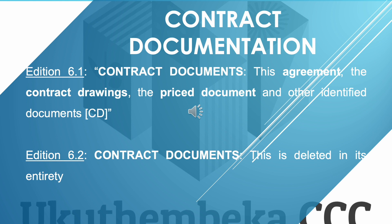The Edition 6.2 includes by express reference the contract drawings and the price document in the agreement definition. The Edition 6.1 definition of contract documents read: 'the agreement, the contract drawings, the price document, and other identified documents in the contract data.' Edition 6.2 does not have a definition for contract documents at all, because reference to contract drawings and the price document is now included in the agreement definition — it has been deleted in its entirety.